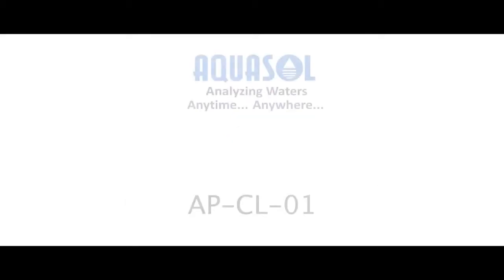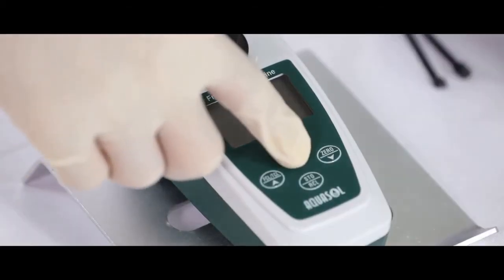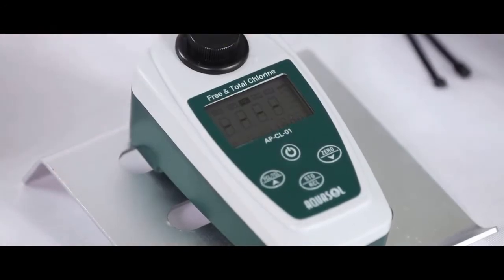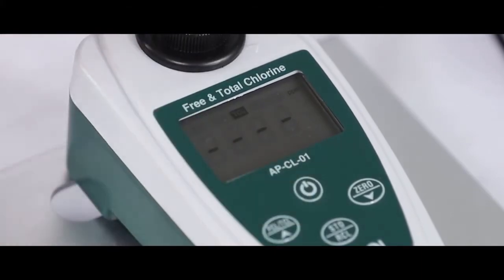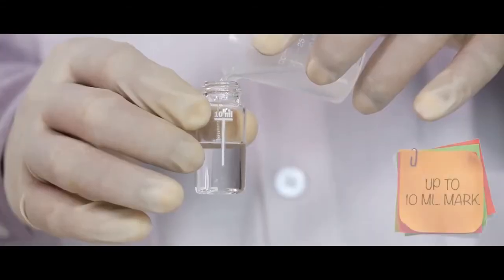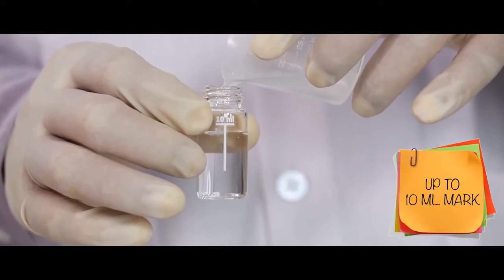This is the portable meter to test the free and total chlorine. Press the power button to switch on the meter. Press FCL/TCL button to change the mode. Fill the sample in the glass bottle up to the mark.